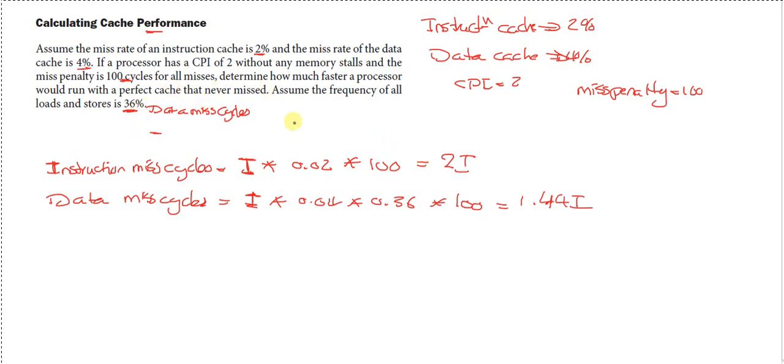So the number of memory stall clock cycles is equal to 2I plus 1.44I collectively, which would be equal to 3.44I. That's actually more than 3 clock cycles of memory stalls per instruction.